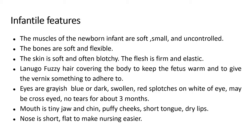There are certain characteristics that make the infant unique. The muscles of the newborn infant are soft, small, and uncontrolled. The bones are soft and flexible. The skin is soft and often blotchy, and the flesh is firm and elastic. The eyes are grayish blue or dark with red spots on the white of the eye, and the eyes may appear crossed because eye development is not fully completed at birth — after three months the eye development will be completed. The mouth has a tiny jaw, puffy cheeks, and short tongue, and the lips are dry. The nose is short and flat, making nursing easy.